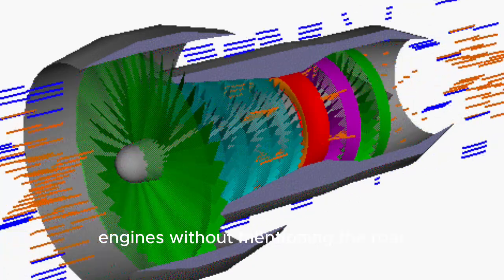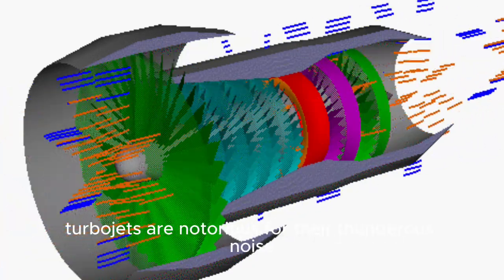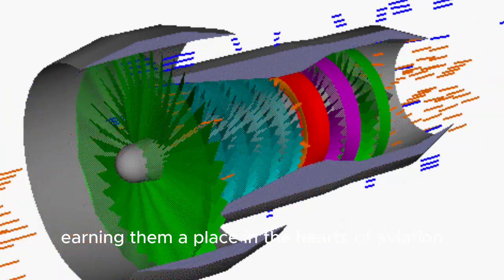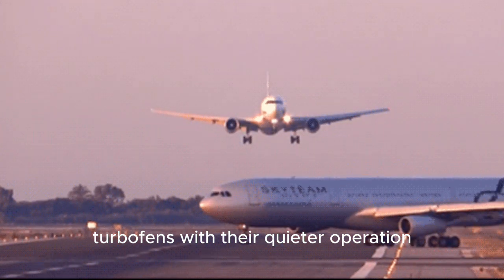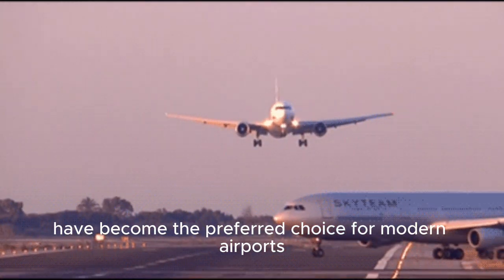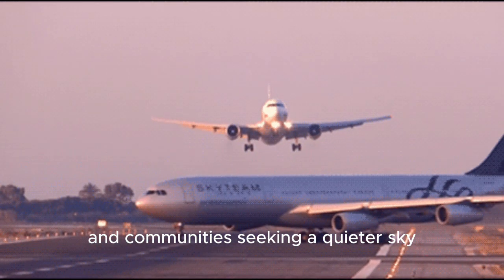You can't talk about jet engines without mentioning the roar. Turbojets are notorious for their thunderous noise, earning them a place in the hearts of aviation enthusiasts. On the other hand, turbofans, with their quieter operation, have become the preferred choice for modern airports and communities seeking a quieter sky.